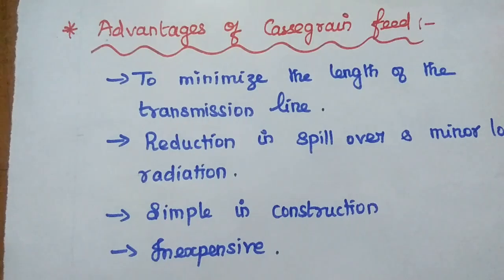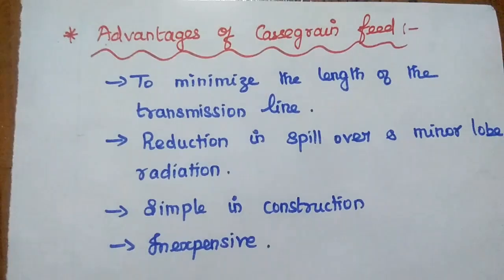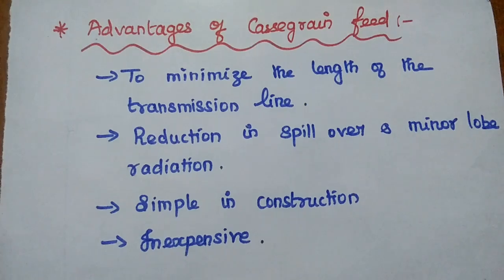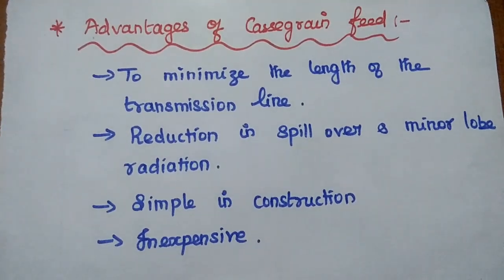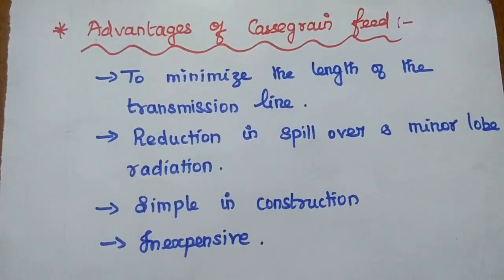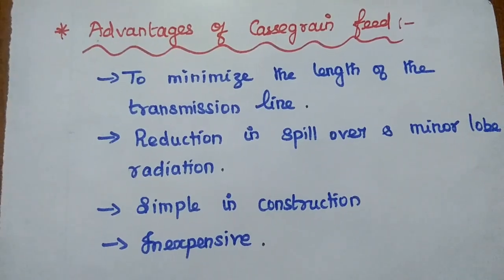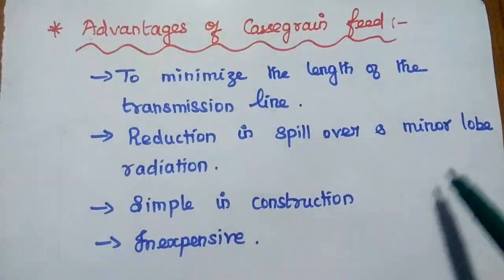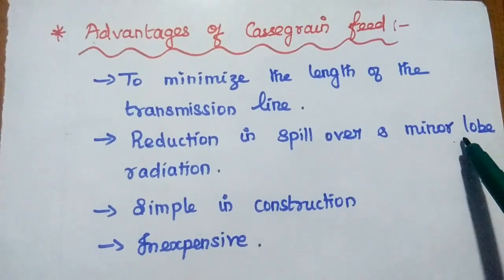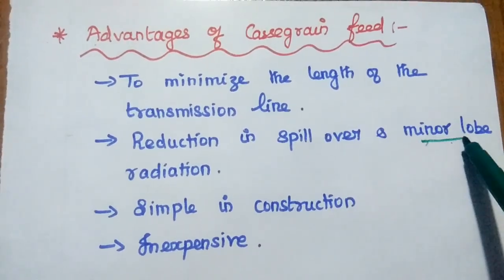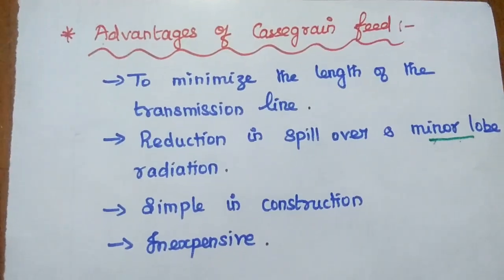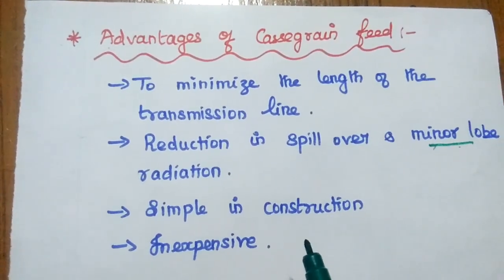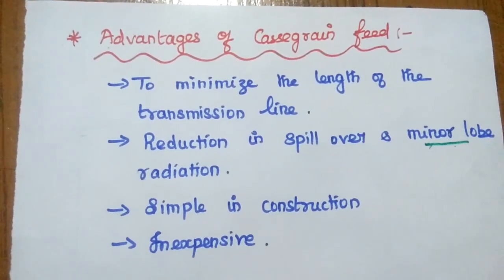Advantages of the Cassegrain feed system: it is mainly used to minimize the length of the transmission line, and it achieves reduction in spillover and minor lobe radiation. Since we are using a subreflector in front of the primary reflector, it reduces the minor lobe radiation, which here represents the back lobe radiation. It is also simple in construction and quite inexpensive.